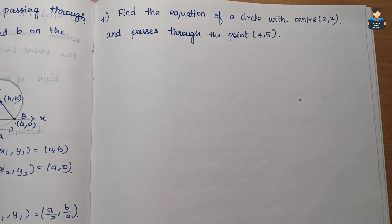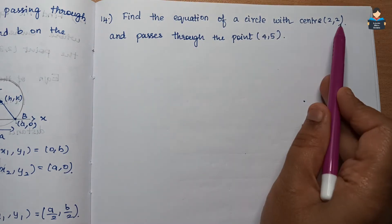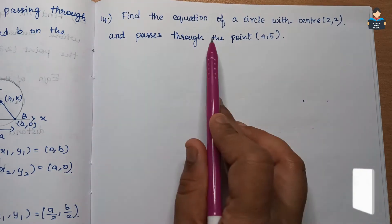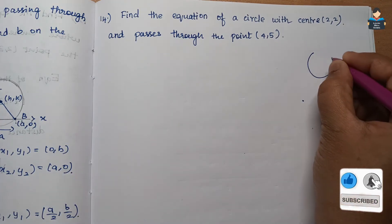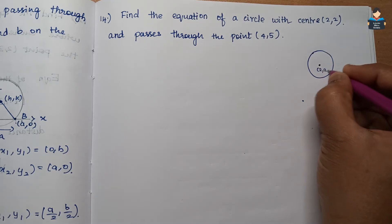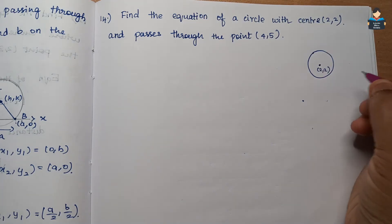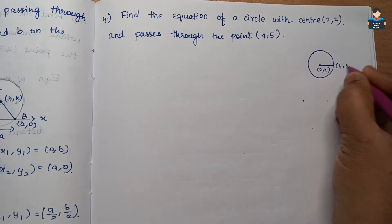Hello everyone, welcome to our channel. In this video, Class 11 Conic Sections Exercise 10.1, Question 14: find the equation of a circle with center (2,2) that passes through the point (4,5). So the center is (2,2) and it passes through the point (4,5).